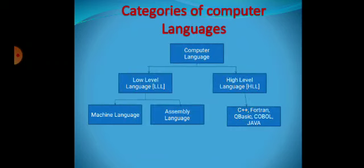Now we will learn about the categories of computer languages. Computer language is divided into two parts: low level language and high level language. A low level language is further divided into two parts: machine language and assembly language. High level language also has modern high level languages. Some of the languages used in high level programming are C++, Fortran, QBasic, COBOL, and Java, as you can see in the picture.